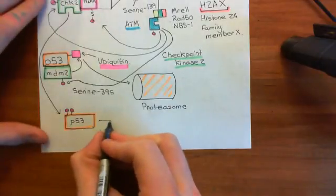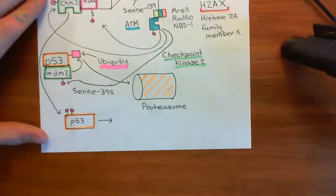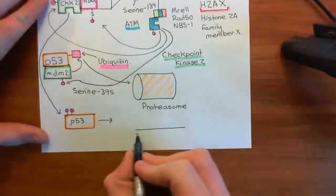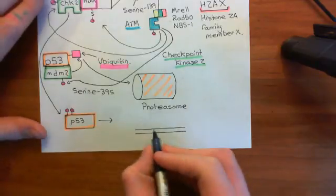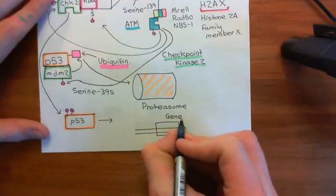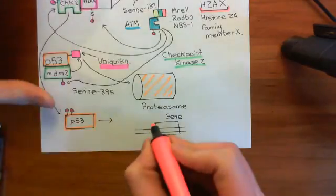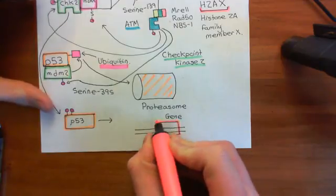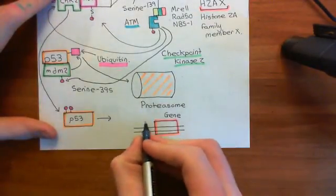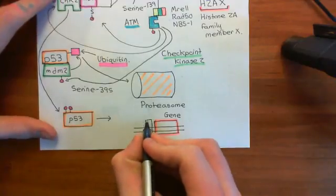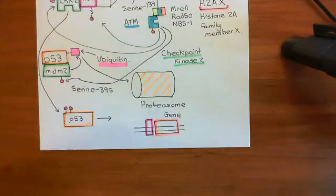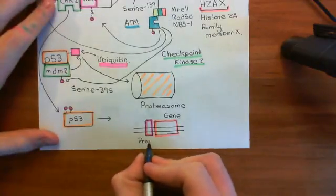This means that P53 ends up surviving, and it is now going to act as a transcription factor. To understand this, consider the following: we have a piece of double-stranded DNA with a gene. Upstream of all genes in the eukaryotic genome, you have a special region known as the promoter region. The promoter region is not going to be translated into protein; however, it is extremely important in controlling the expression level of the downstream gene.